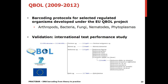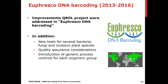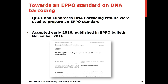The Q-Ball protocols were validated in an international test performance study, from which several recommendations for improvements were made. These were addressed under the Eurofresco DNA barcoding project, under which new tests for several bacteria, fungi, and invasive plant species were added, quality assurance considerations were addressed, and for each organism group a generic process control was introduced. Together, the Q-Ball and Eurofresco DNA barcoding projects resulted in the preparation of an EPPO standard, which was published in November 2016. This EPPO standard, together with all other EPPO standards, can be found on the EPPO website and downloaded for free.